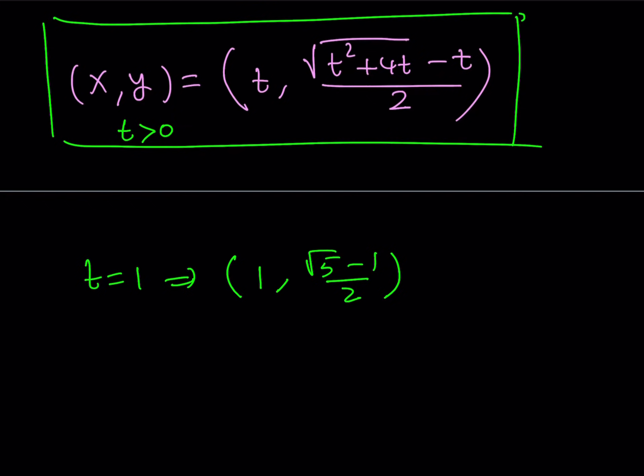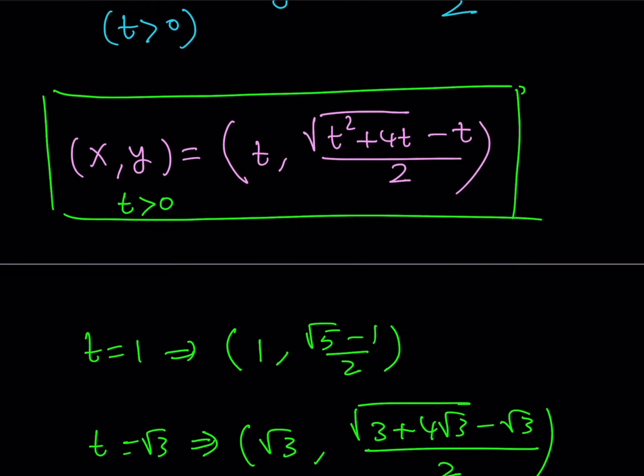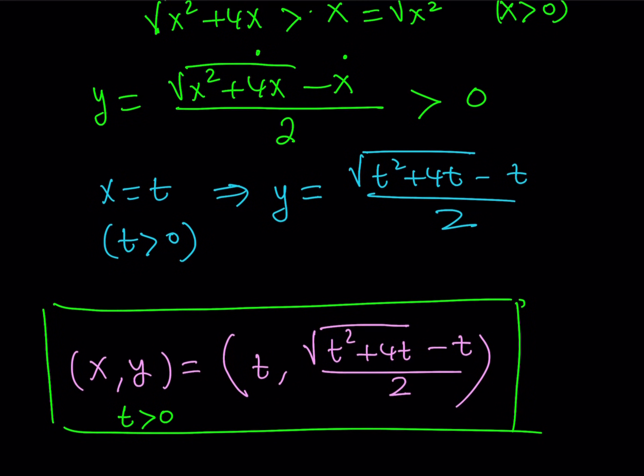Now you may also do this backwards that which value is going to give you square root of 5 plus 1 over 2 for the y. And you just need to solve for t. Or if t is equal to something like square root of 3, then from here, we're going to get square root of 3 comma square root of 3 plus 4 square root of 3 minus square root of 3 divided by 2. You can make it as crazy as you want, but obviously, for infinitely many positive values of t, we get infinitely many ordered pairs that are solutions to this equation. This means that this equation is possible.